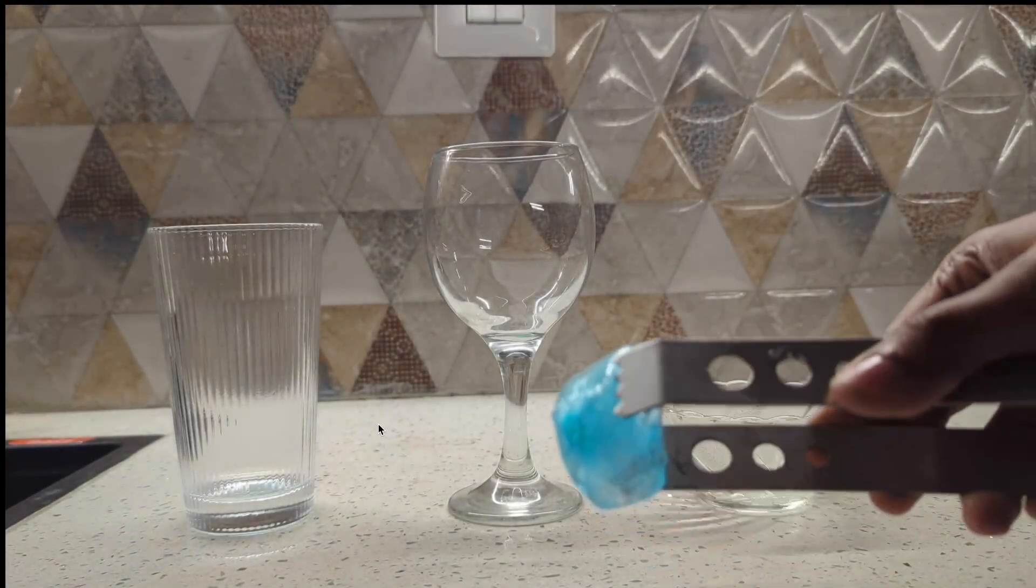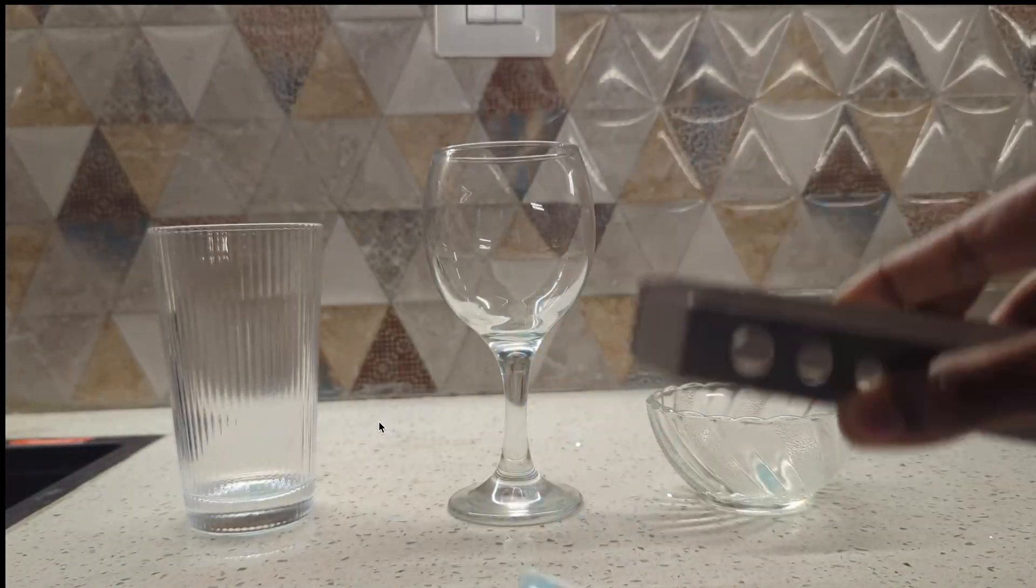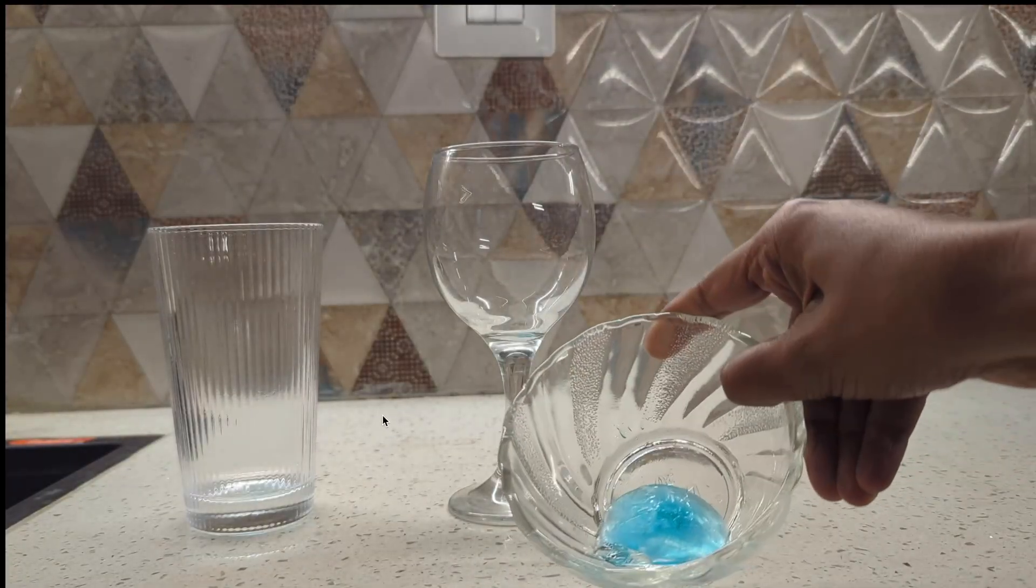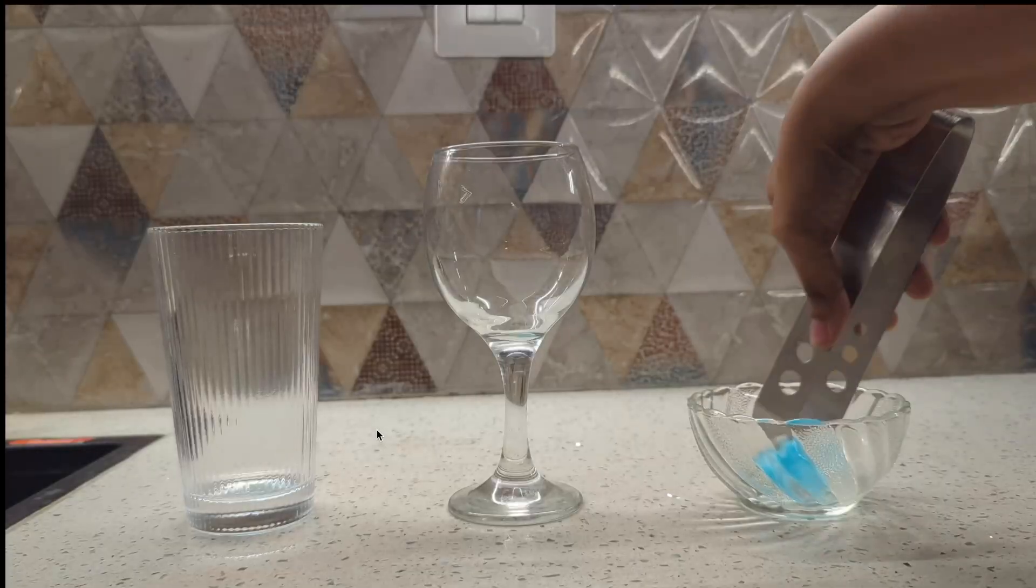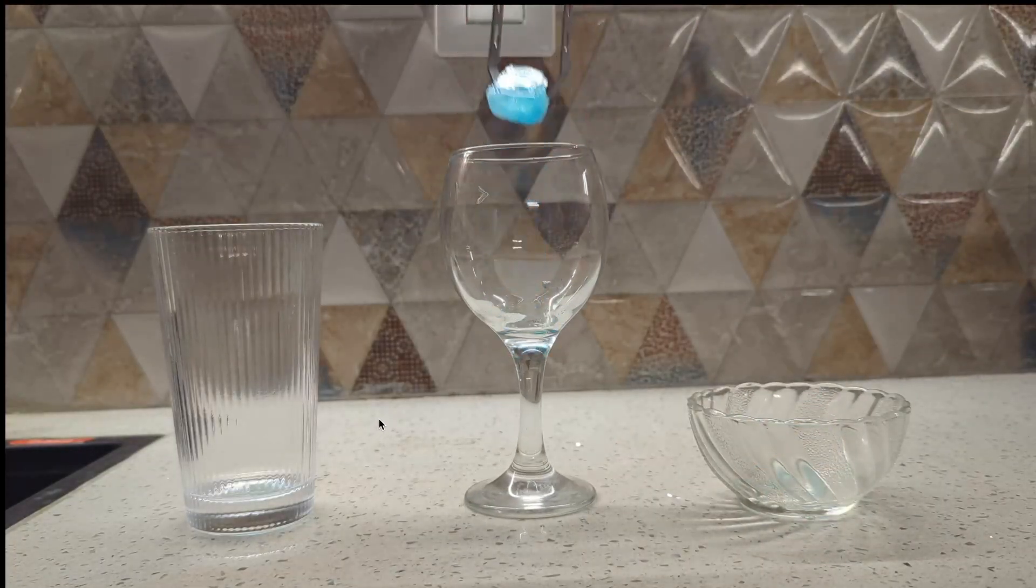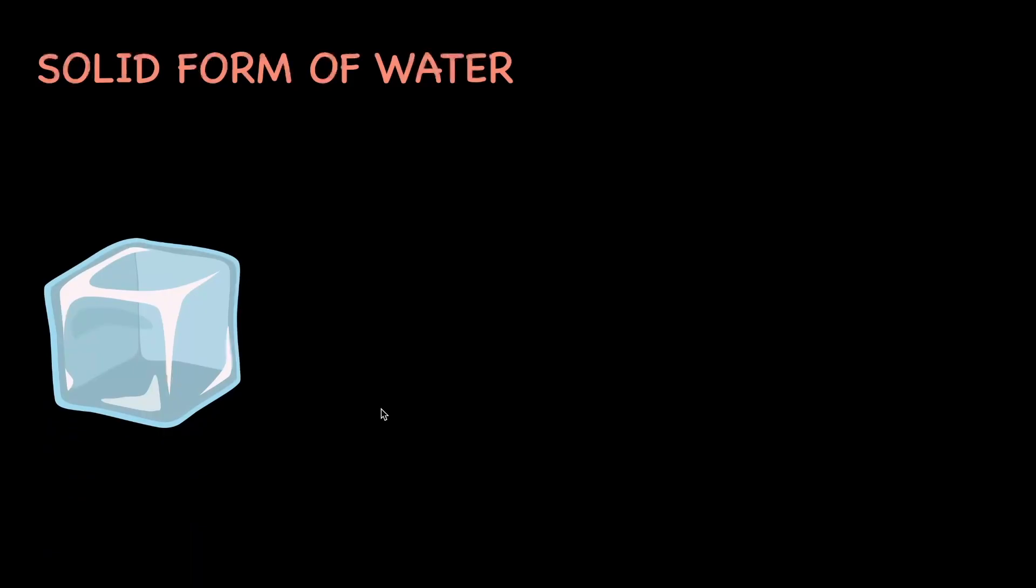Now, when I take it out, notice how my water has become, it's no longer free-flowing, but rather it has become rigid and hard. And as I keep transferring it from one bowl to the next, notice how the shape doesn't change, but rather it remains the same. This form of water is what we call the solid form, wherein often we know this solid form as ice.